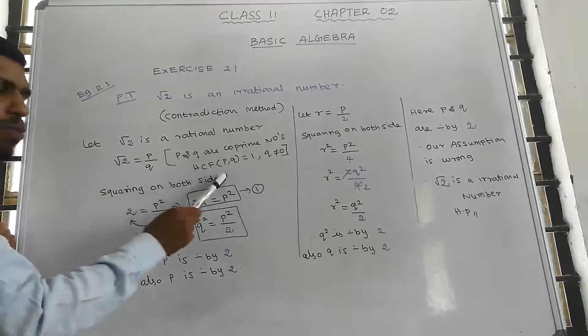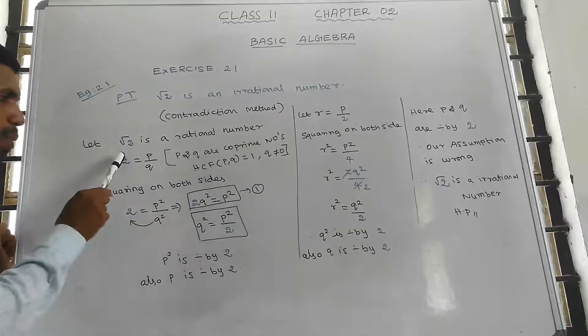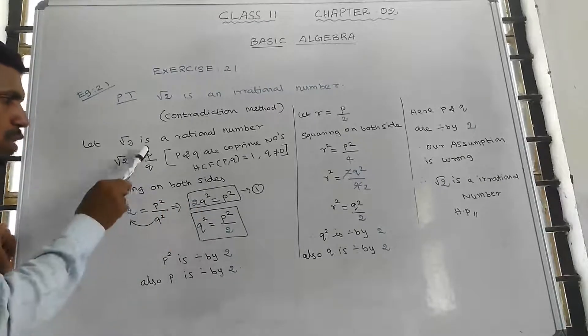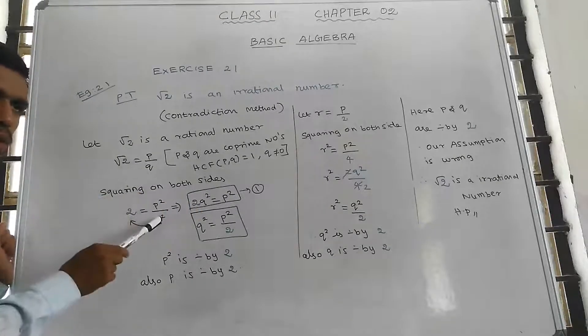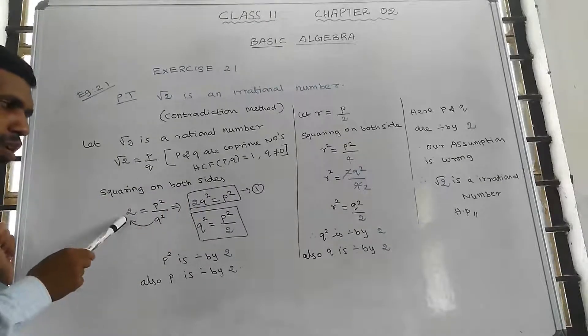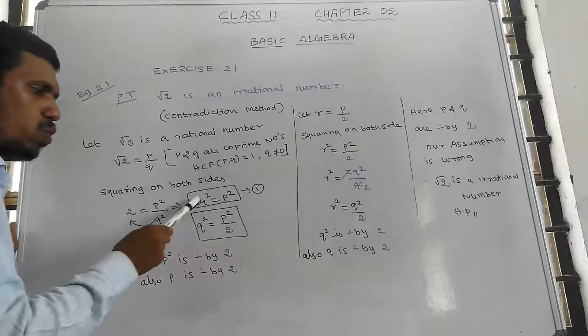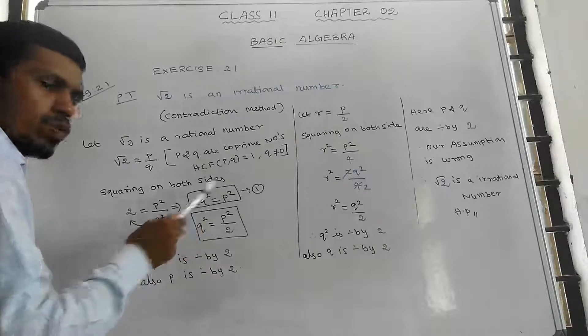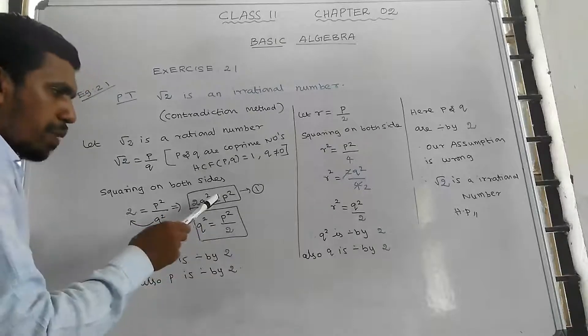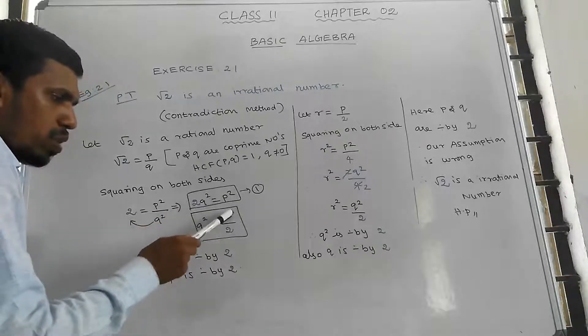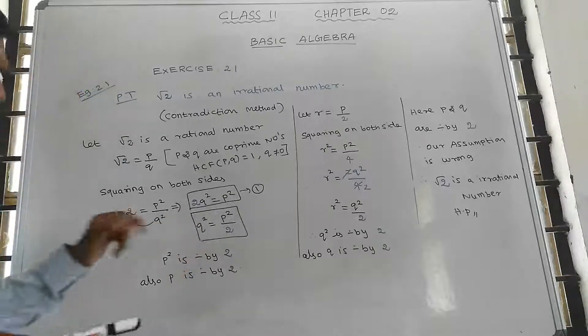We square both sides of the equation. So 2 is equal to p squared divided by q squared. By cross multiplication, 2q squared is equal to p squared. This means p squared is divisible by 2.